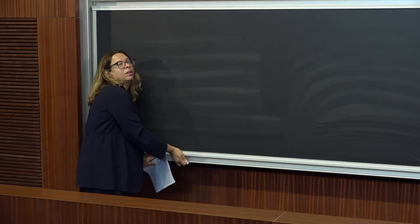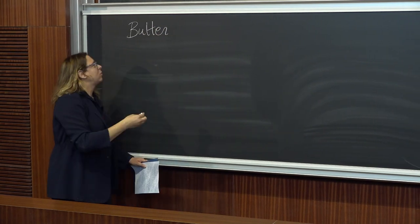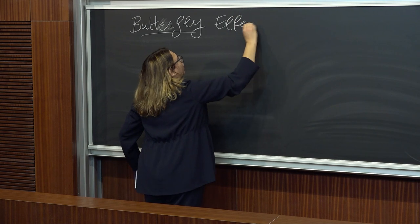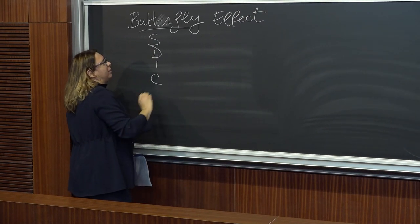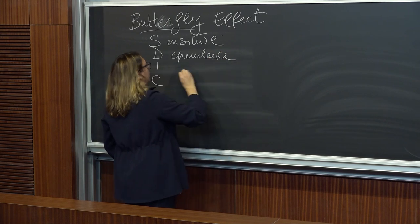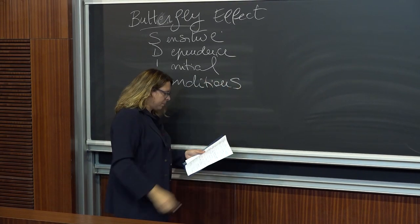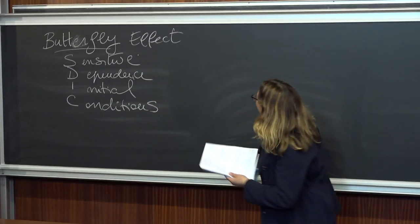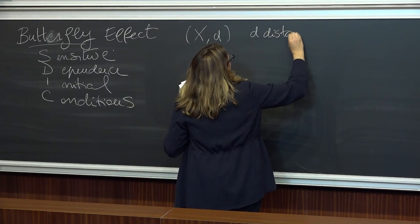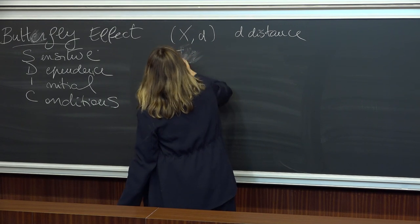There is one feature of chaotic systems common to all definitions of chaos, and which is commonly associated with chaos — I'm sure you've heard about the butterfly effect. Mathematically, we call it sensitive dependence on initial conditions, or SDIC. Let's give a mathematical definition, assuming our space is a metric space so we have a distance.